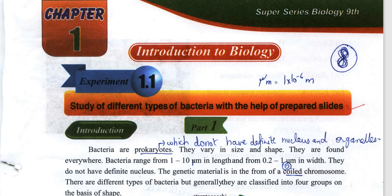Assalamu alaikum. Experiment number 1.1 from chapter number 1 of biology: to study the different types of bacteria with the help of prepared slides or prepared chart. Also, you have to observe in this experiment amoeba, paramecium, and volvox.